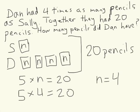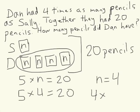So Sally has N equals four pencils. Now, the question is asking how many pencils did Dan have. Dan has four groups of N, so I have to take four groups of four — because N equals four — which equals 16. So Dan had 16 pencils.